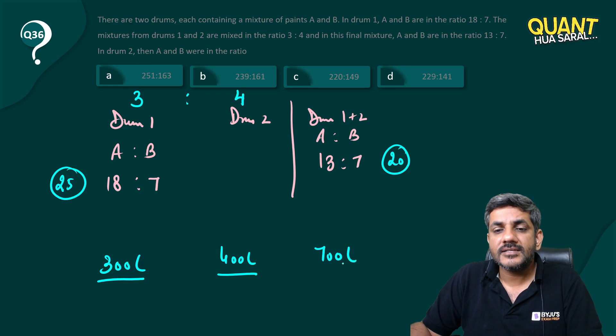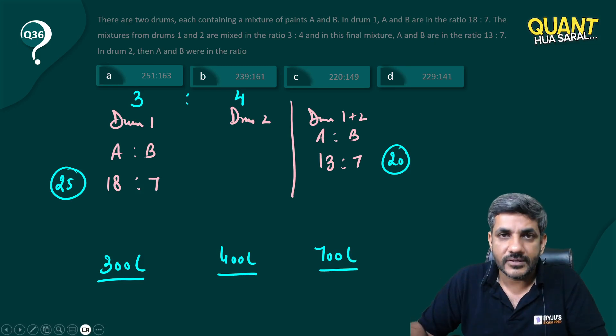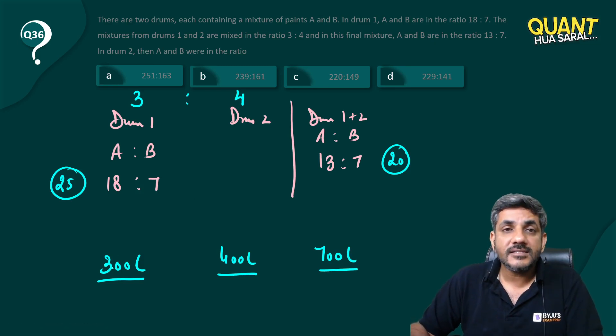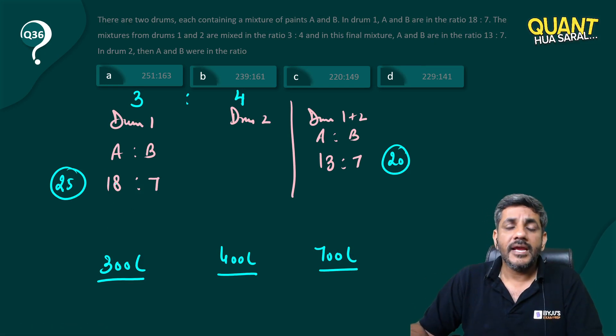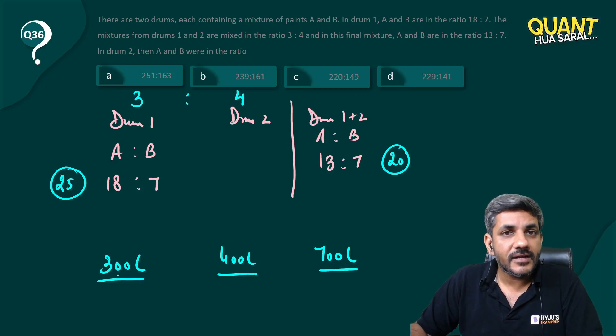Of course 700 liters would be formed in the final mixture. Now if 300 liters is taken from drum 1, how much of that would be A? You can work on B as well, any one of them. It would be 18/25 times 300, so 12 into 18 is 216.